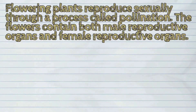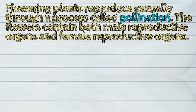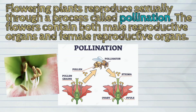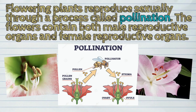Flowering plants reproduce sexually through a process called pollination. The flowers contain both male reproductive organs and female reproductive organs.